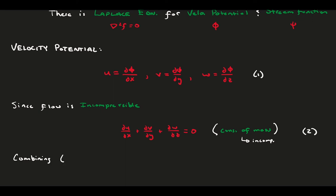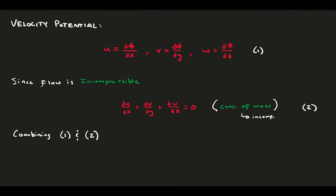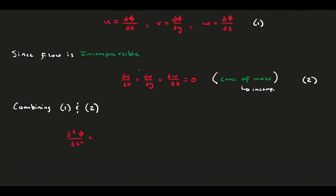We can combine this with the velocity potential definition, and we arrive at the differential form of the Laplacian operator equating to zero. This means that the velocity potential, due to the conservation of mass, satisfies the Laplace equation.